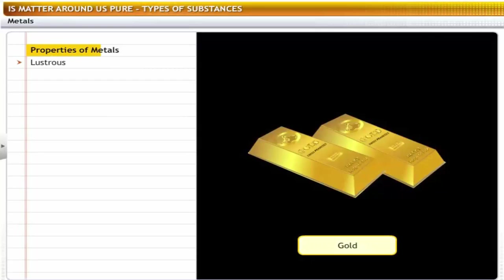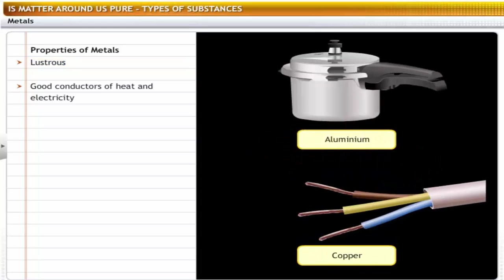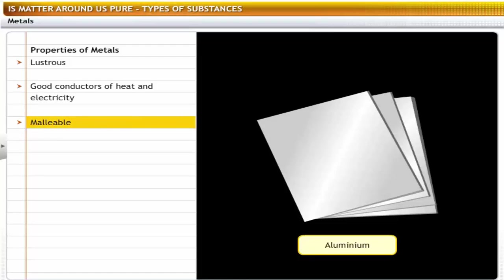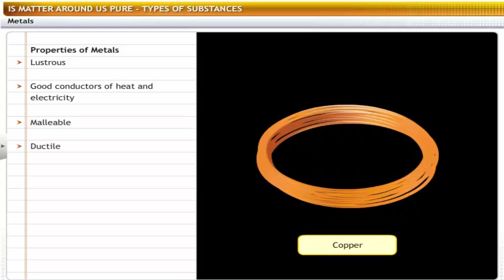Let's observe some of the properties of metals. Metals have lustre — when freshly cut, they show metallic lustre, for example, gold. Metals are good conductors of heat and electricity. As metals have free electrons in them, they are able to conduct heat and electricity, for example, copper. Metals are malleable, meaning they can be hammered into thin sheets, for example, aluminum. Metals are ductile, which means they can be drawn into wires, for example, copper.